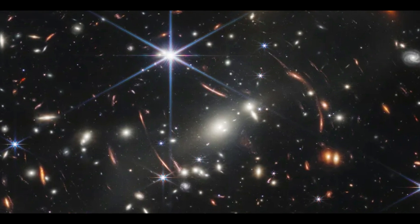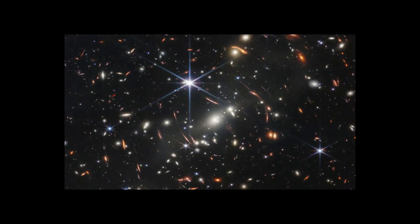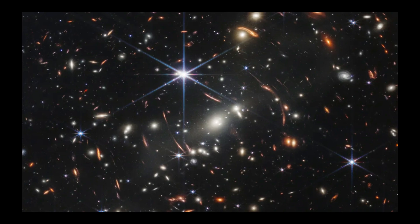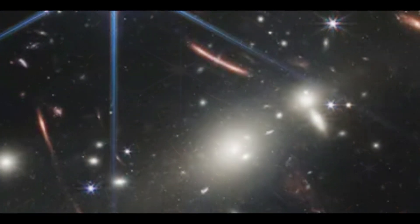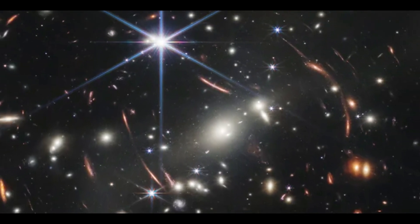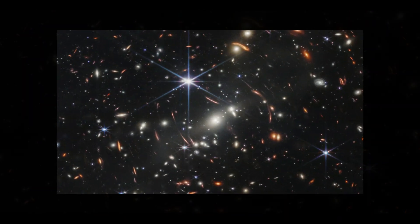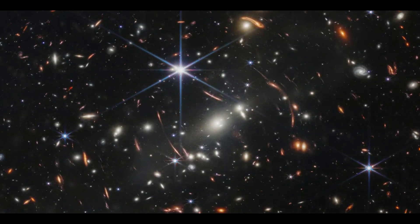The image, dubbed Webb's first deep field, shows many of these lensed background galaxies, the oldest of which is over 13 billion years old. According to astronomers, this galaxy developed only approximately 680 million years after the Big Bang.